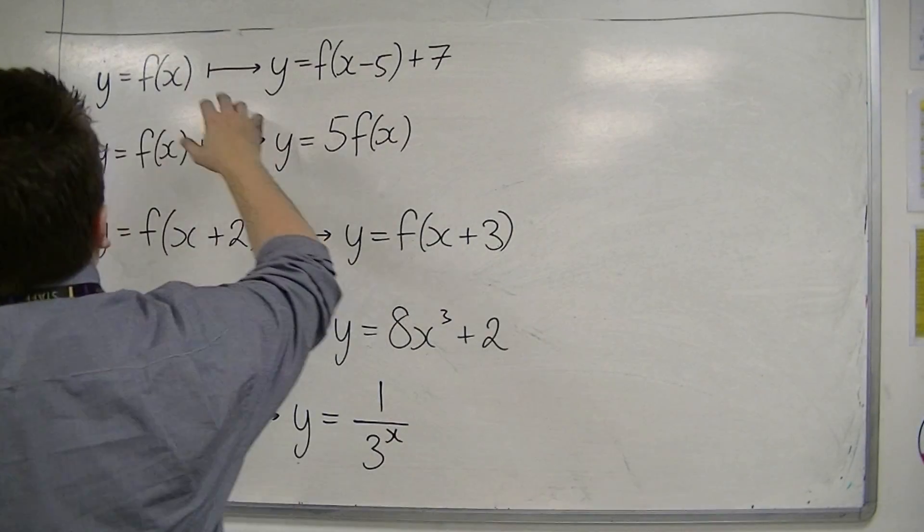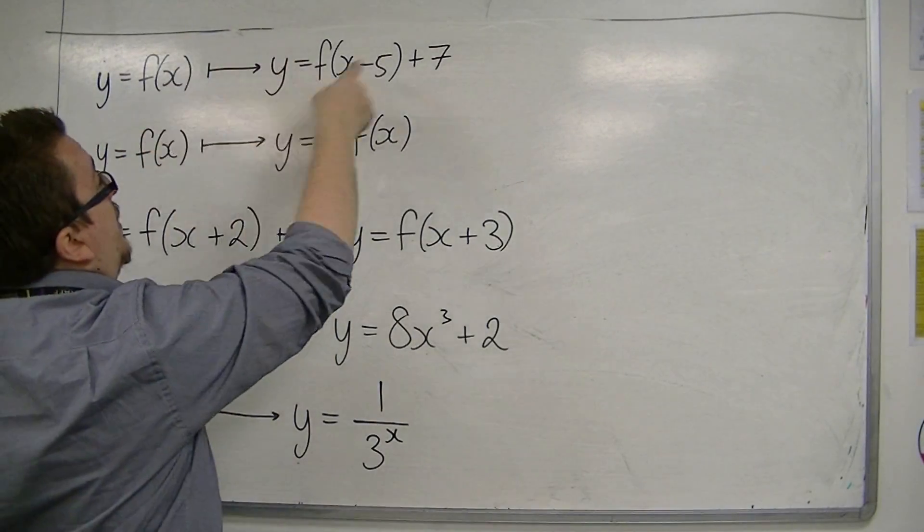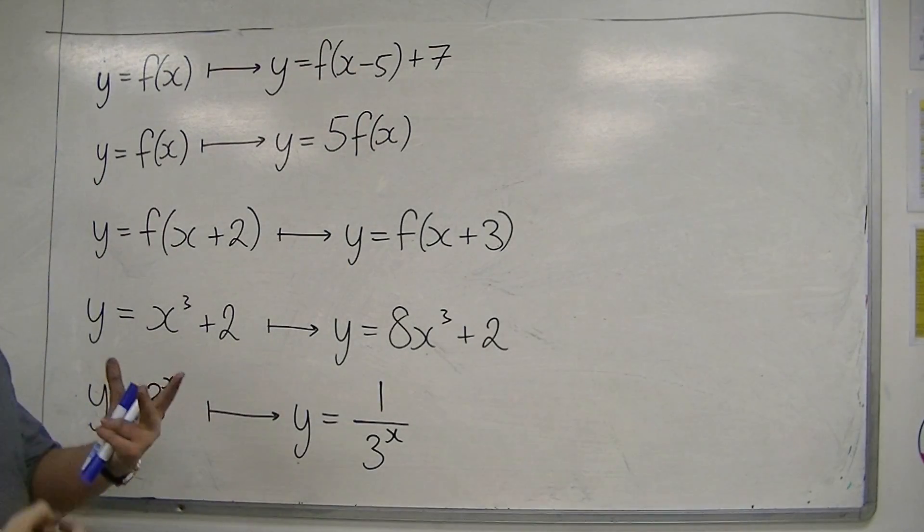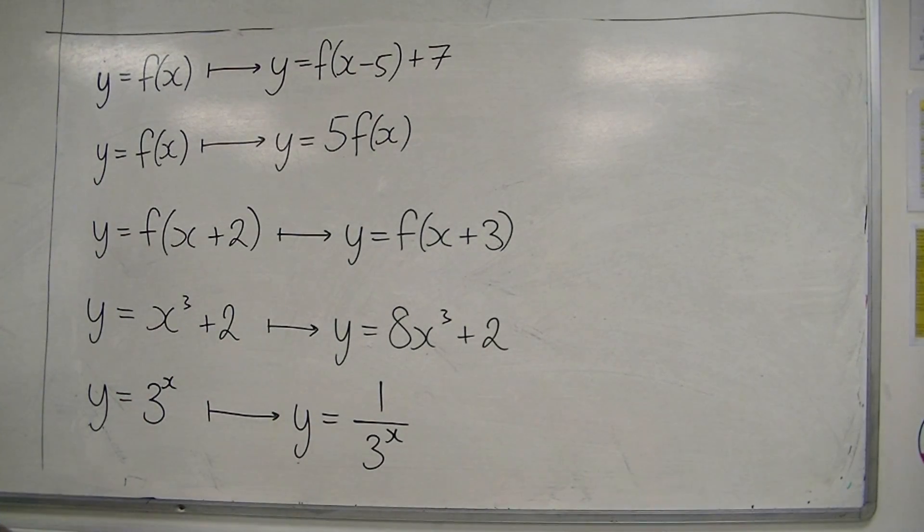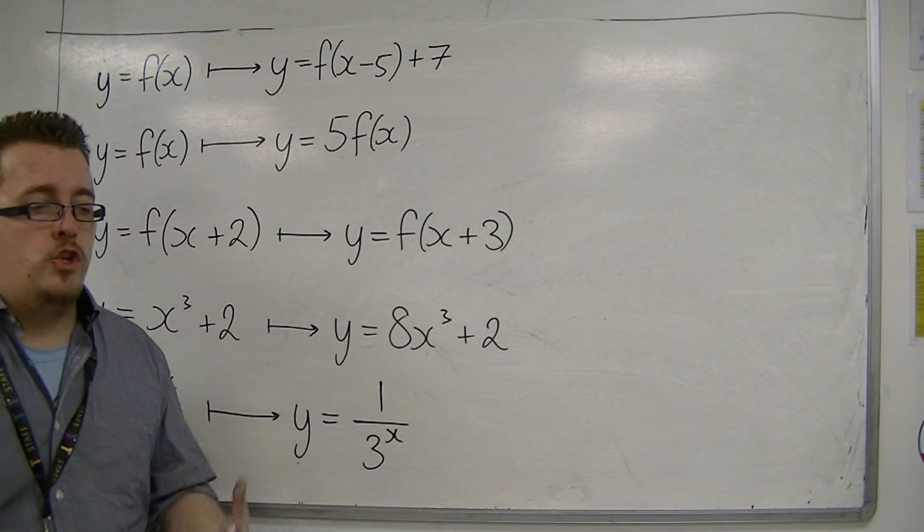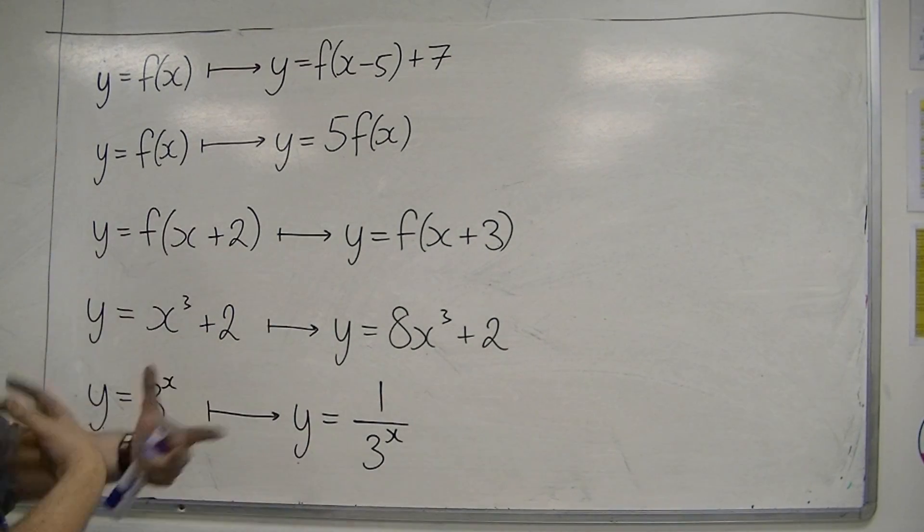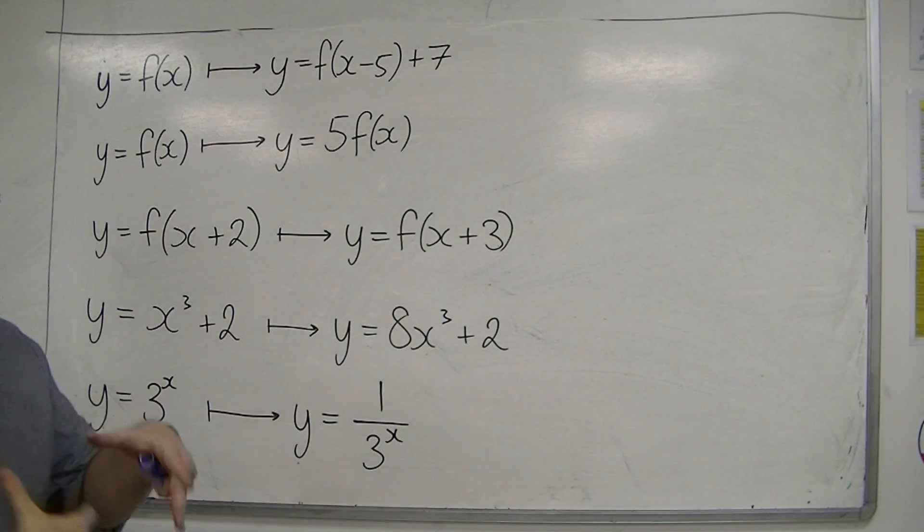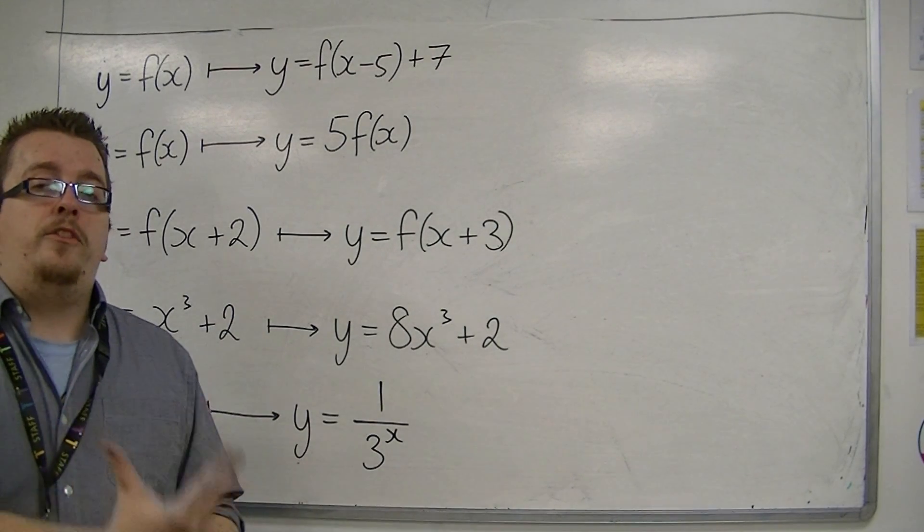Firstly, y equals f of x has been transformed, or mapped, to y equals f of x minus 5 plus 7. Now, because we've got the addition of numbers appearing in the brackets and outside the brackets, this would lead me to assume that it is a translation.